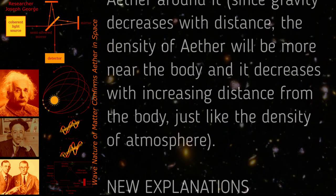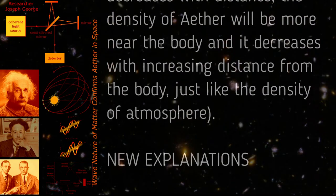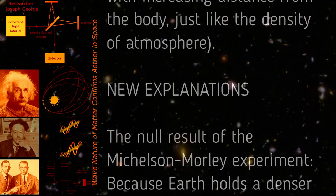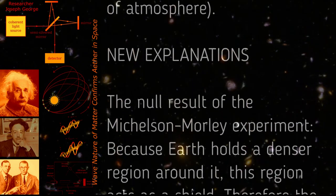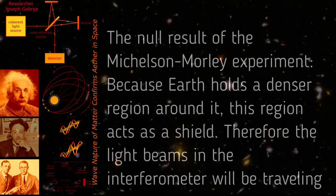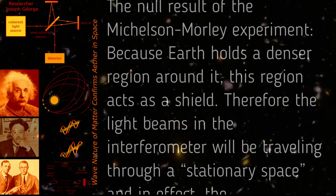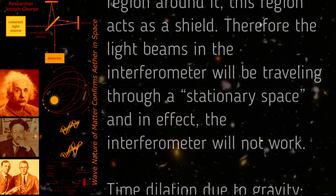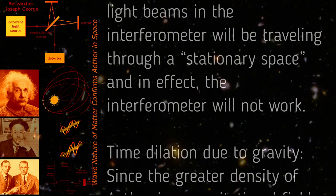The null result of the Michelson-Morley experiment: because Earth holds a denser region around it, this region acts as a shield. Therefore, the light beams in the interferometer will be traveling through a stationary space, and in effect the interferometer will not work.